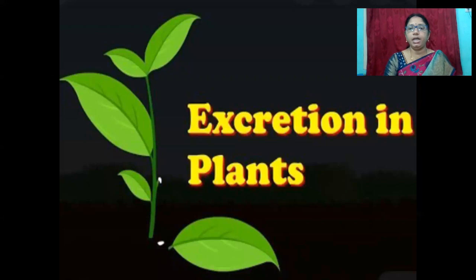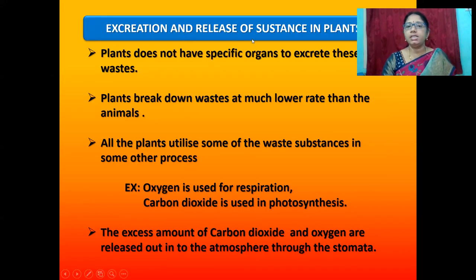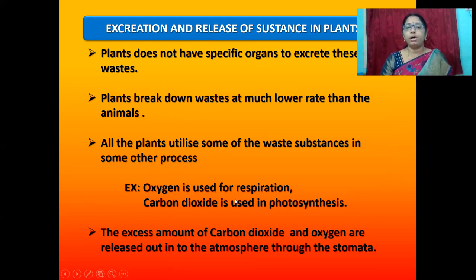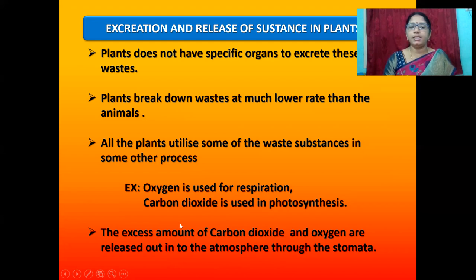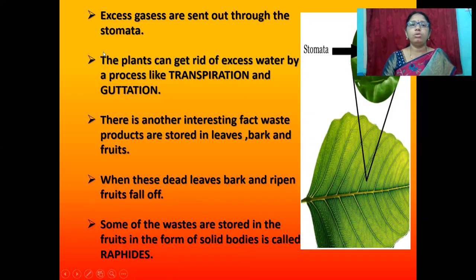Now let us discuss excretion and release of substances in plants. Plants do not have specific organs to excrete wastes. Plants break down wastes at a much lower rate than animals. All plants utilize some of the waste substances in other processes — for example, oxygen is used for respiration, and carbon dioxide is used in photosynthesis. The excess amounts of carbon dioxide and oxygen are released into the atmosphere through the stomata.